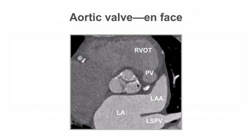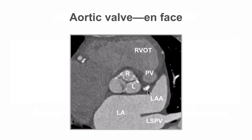This slide shows the relevant anatomy at this point. We can see the left atrium, the left atrial appendage, the left superior pulmonary vein, along with the right ventricular outflow tract and the pulmonary valve. This is the right coronary cusp of the aortic valve — the most anterior of all three cusps. This is the left coronary cusp from which the left main stem arises, and this is the non-coronary cusp which lies adjacent to the interatrial septum.